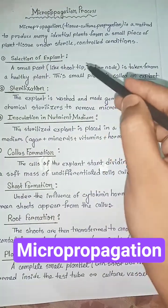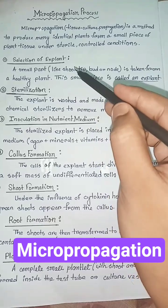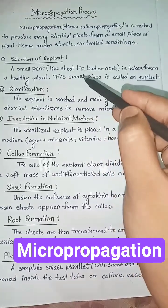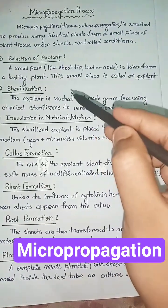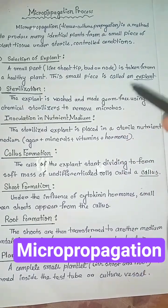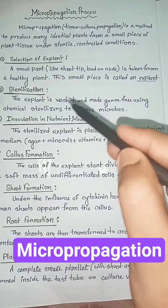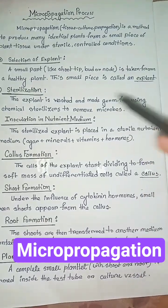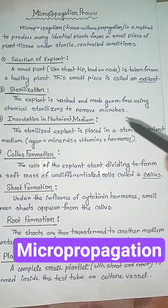Steps of micropropagation process. First step: selection of explant. A small part like shoot tip, bud, or node is taken from a healthy plant. This plant piece is called an explant. Next step: sterilization. The explant is washed and made germ-free using chemical sterilizers to remove microbes.